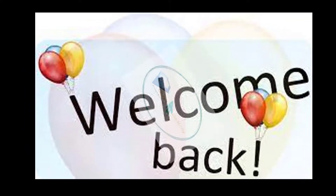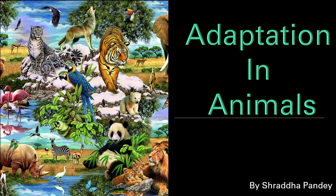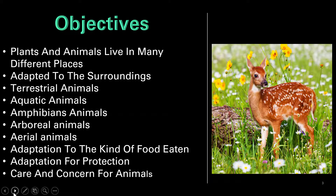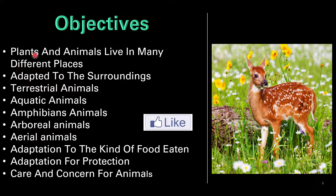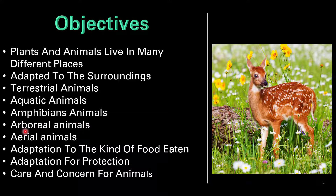Hello everyone, welcome back to Vigyan Academy for Maths and Science. I'm Shudha Pandey. In this video we are going to talk about animals and the topic is adaptation in animals. This topic is taken from Class 4 Science of S. John Publication ICSC textbook. In this lesson we are going to cover objectives: plants and animals live in many different places, adapted to the surroundings, terrestrial animals, aquatic animals, amphibious animals, arboreal animals, aerial animals, adaptation to the kind of food eaten, and adaptation for protection, and also care and concern for animals.